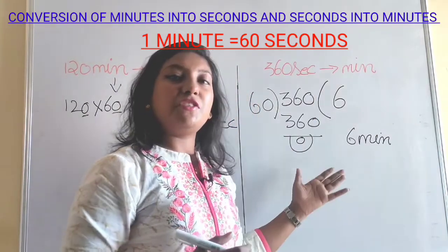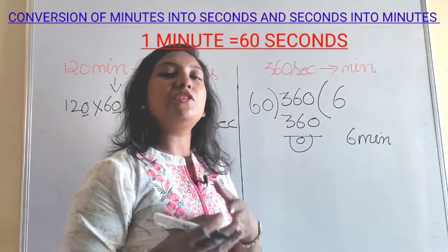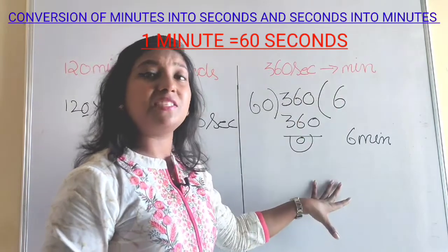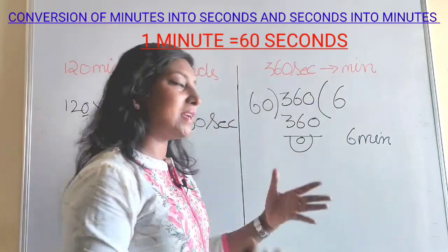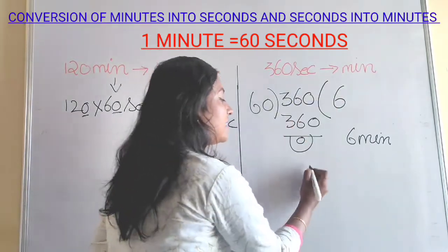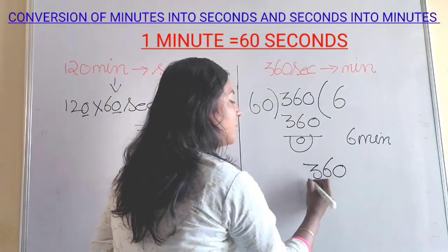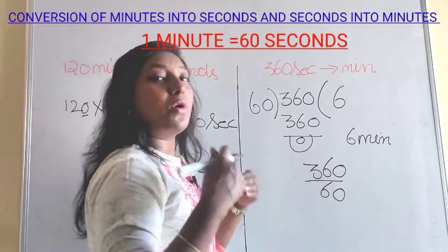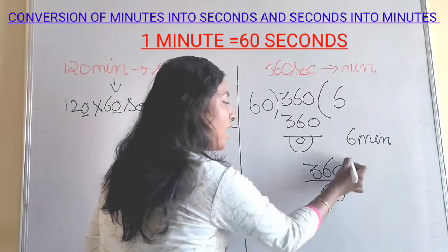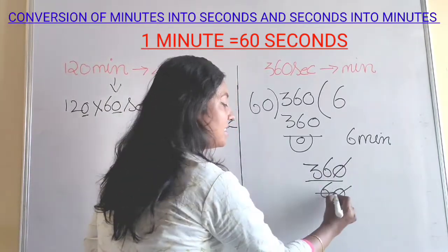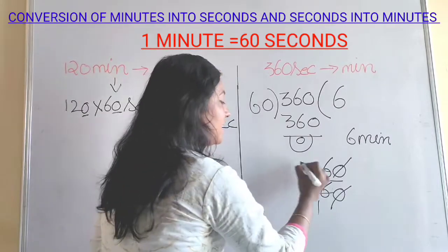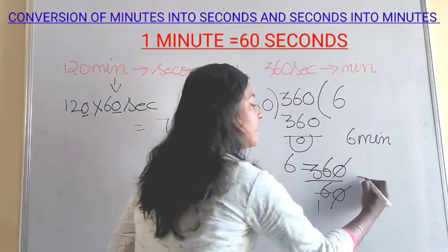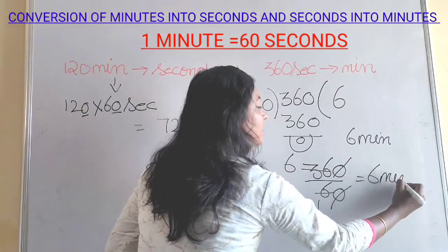Without doing the long division, you can simply do cancellation. Take 360 divided by 60 and cancel the zeros. Then 6 sixes are 36, so we get our answer: 6 minutes.